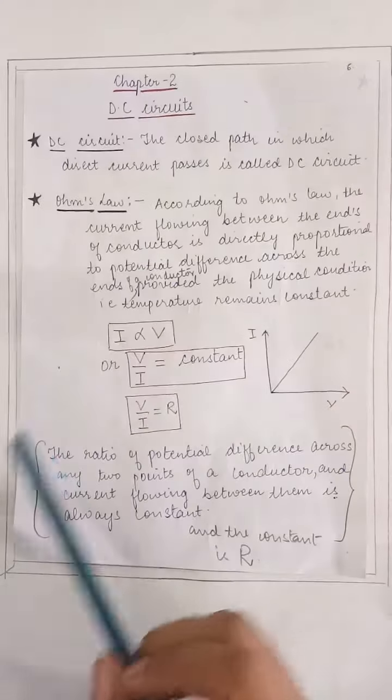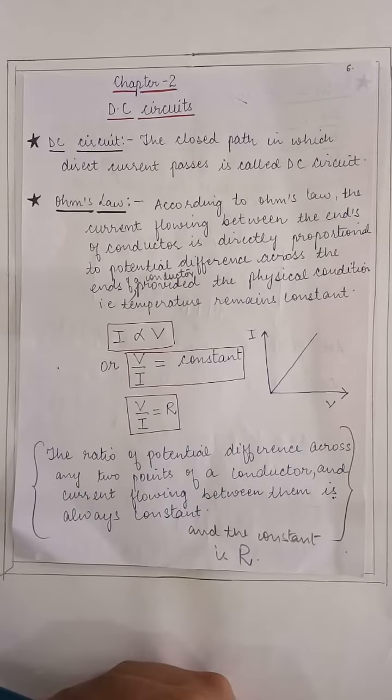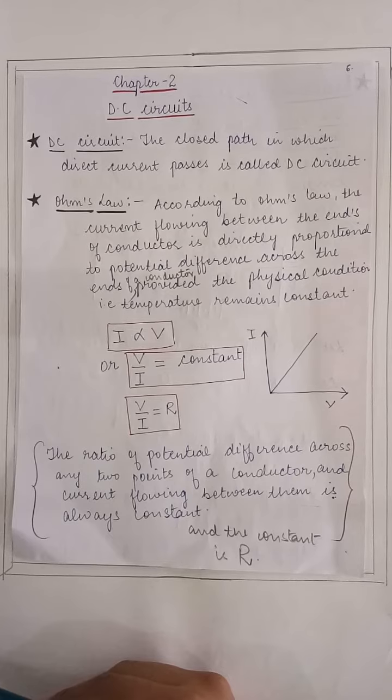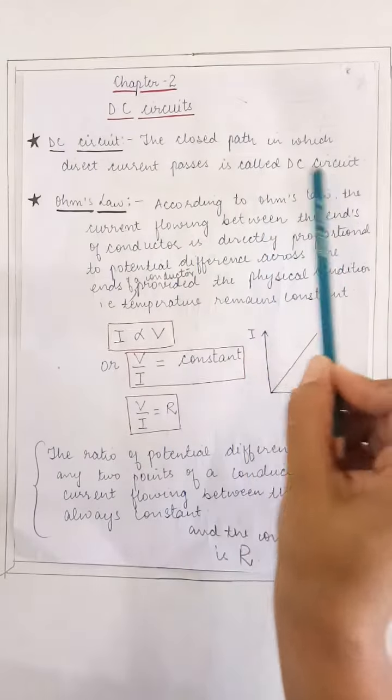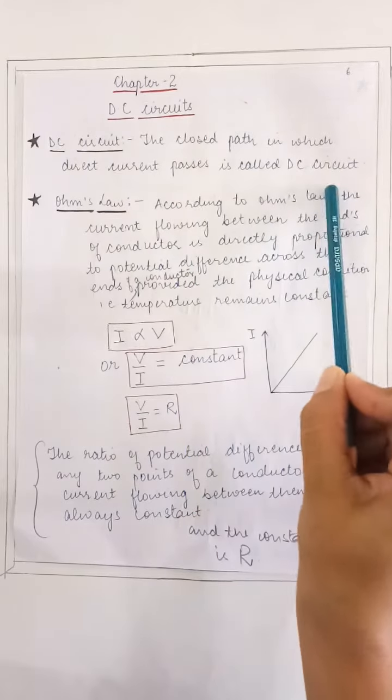I am going to start with the second chapter of FEE, that is DC circuits. First of all, what is DC circuit? The closed path in which direct current passes is called DC circuit.